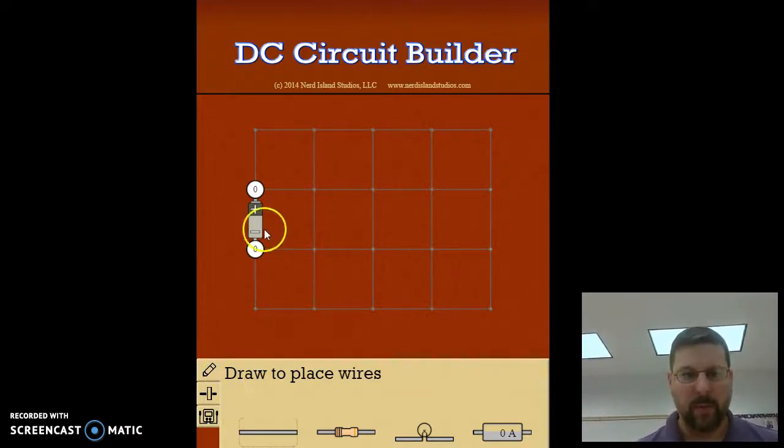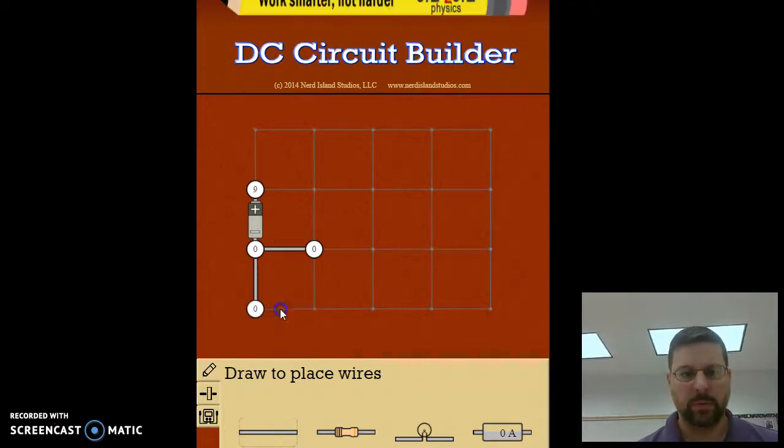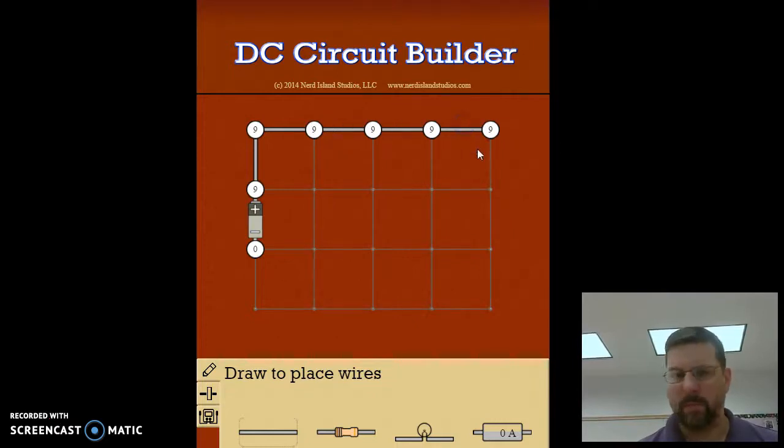Again we have our DC circuit builder battery here and our parts: wire, resistor, light bulb, and current or ammeter. So to build our parallel circuit we want to start with a couple wires and go across there.